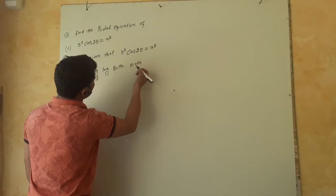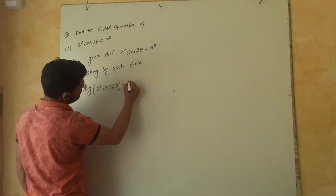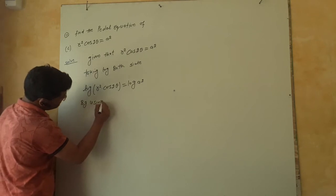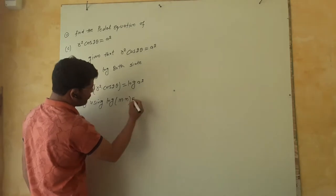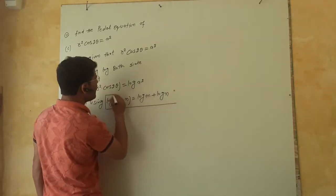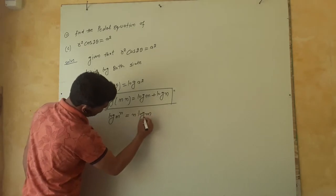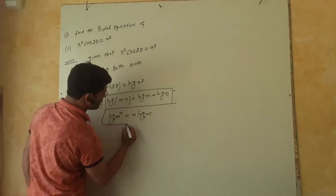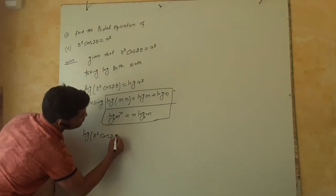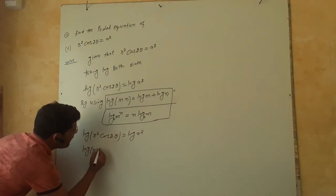log of R squared cos 2θ is equal to log of A squared. By using the property log(M × N) = log M + log N, this gives us log R squared plus log cos 2θ is equal to log A squared.